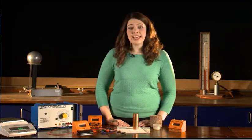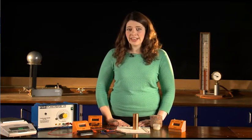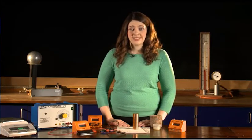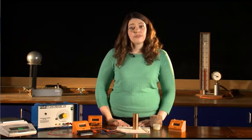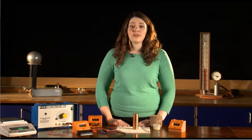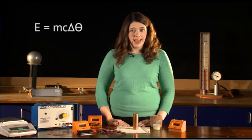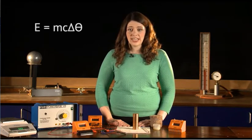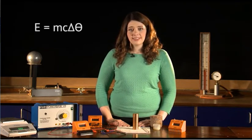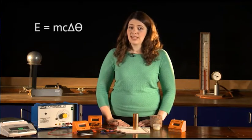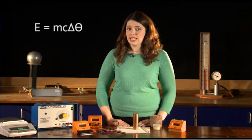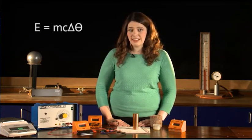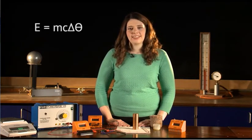Specific heat capacity is simply the energy required to raise one kilogram of the material by one degree Celsius in temperature, and it's governed by an equation. That equation is E equals MC delta theta, which simply means that energy is equal to mass times C, which is the specific heat capacity or SHC, times the change in temperature. The triangle sign is delta and that means change in, and the theta stands for temperature.